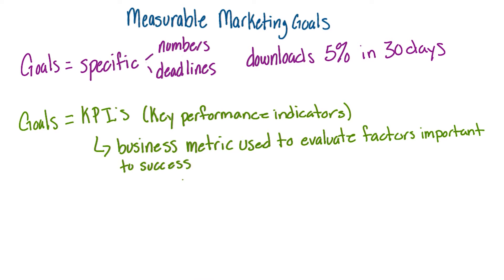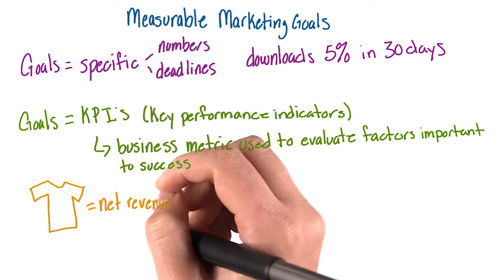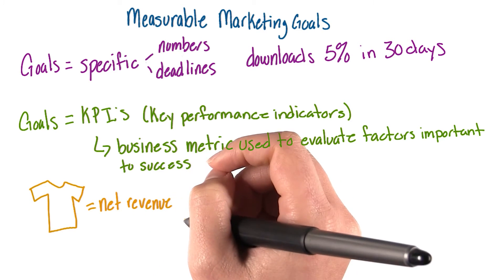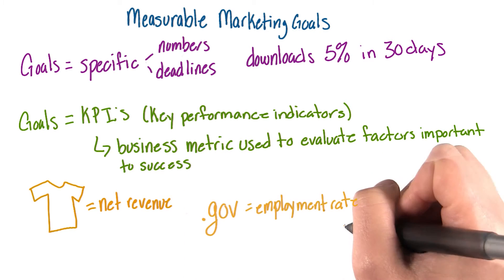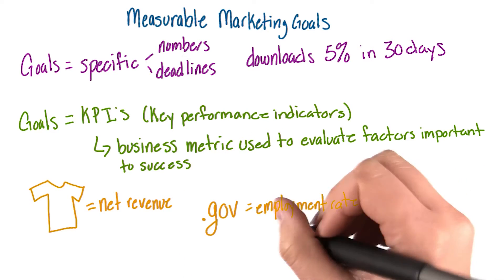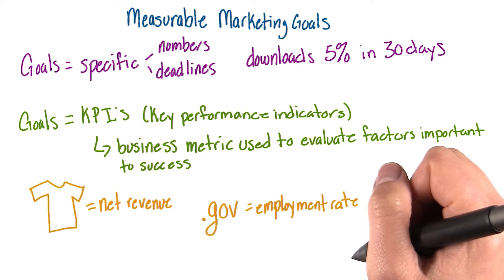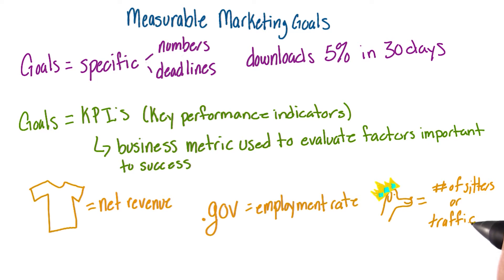Each business will have different KPIs. For example, a clothing store's KPI may be net revenue. The government's KPI may be employment rate. Whereas for Barkment, our KPI could be the number of sitters we have on our site, or the traffic we get to the site.